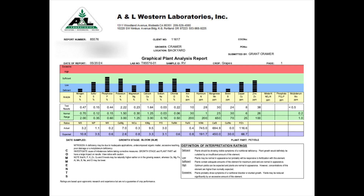So this year, in the petioles, we're deficient in nitrogen, but not in potassium. The potassium treatment worked to improve the potassium deficiency that was discovered in the soil and reflected last year. And we have a very slight low concentration of magnesium, iron deficiency, and boron deficiency, but no other deficiencies are shown.